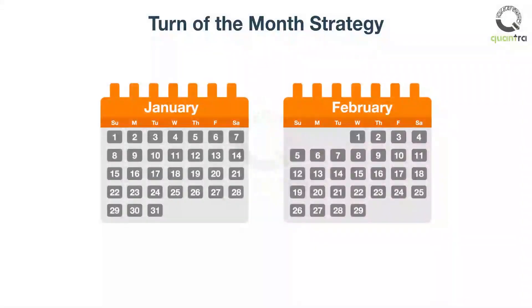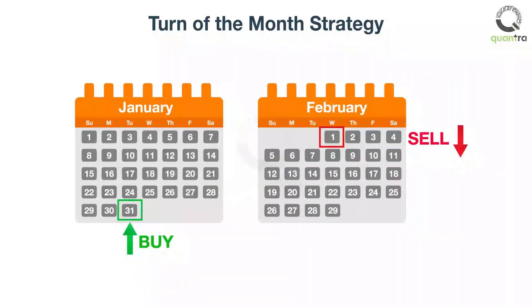Therefore, based on this short statistic, we can suggest a simple version of the turn-of-the-month strategy, which buys an equity index on close at the end of the month, and sells it on close of the first day in the following month.